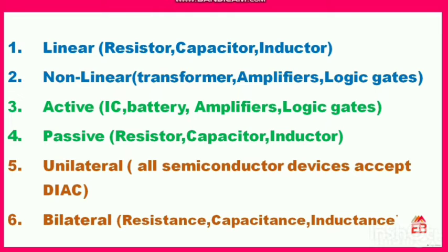Next are unilateral elements — elements in which current flows in only one direction. A simple example of a unilateral element is a diode, where current flows in one direction. All semiconductor devices except the DIAC are called unilateral elements.